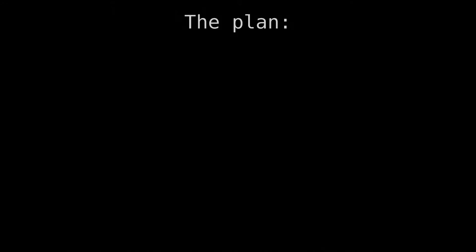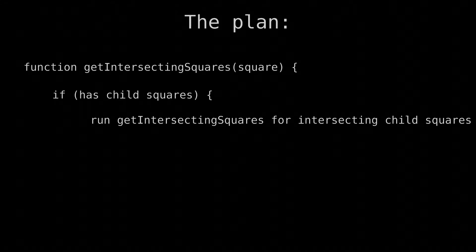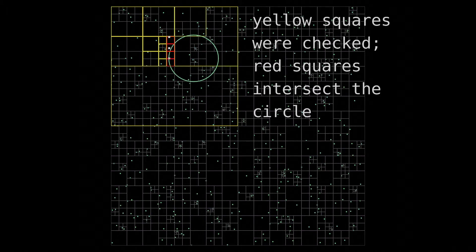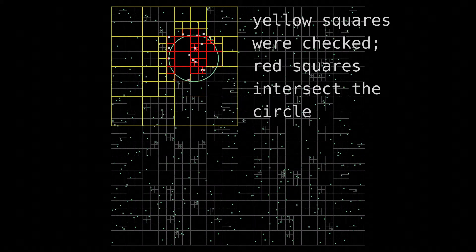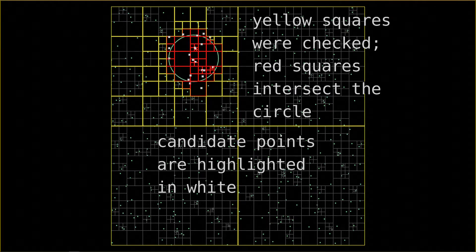Here is our entire thought process in a single cohesive paragraph: for a given square, check whether it has child squares. If it has child squares, repeat this process with any child square intersecting the circle. If the given square does not have child squares, it must contain a point, and that point is added to a list of candidate points we think might be in the circle. Now that this process is complete, we have our list of candidates, and we just need to do the distance test we did before. And done.